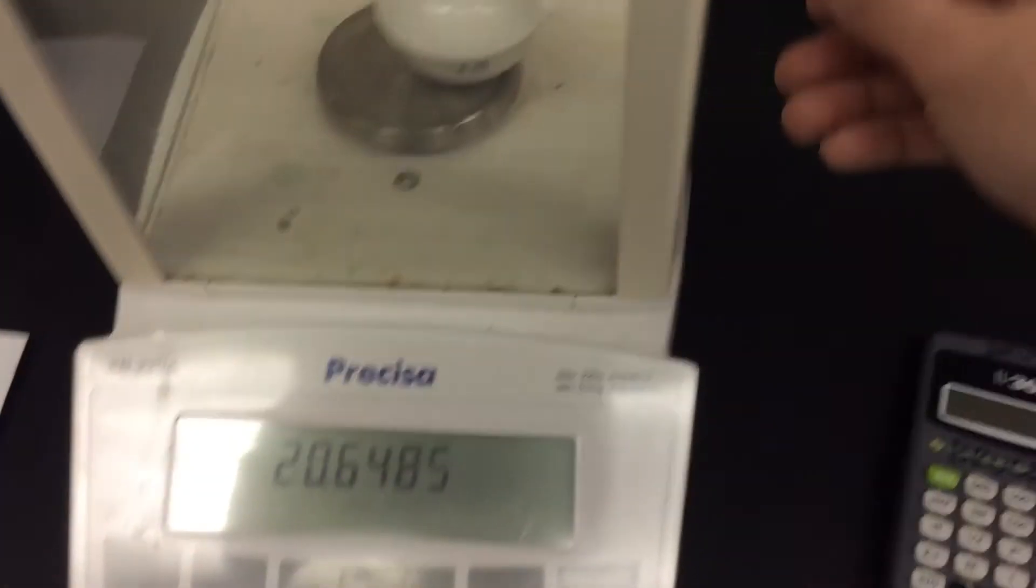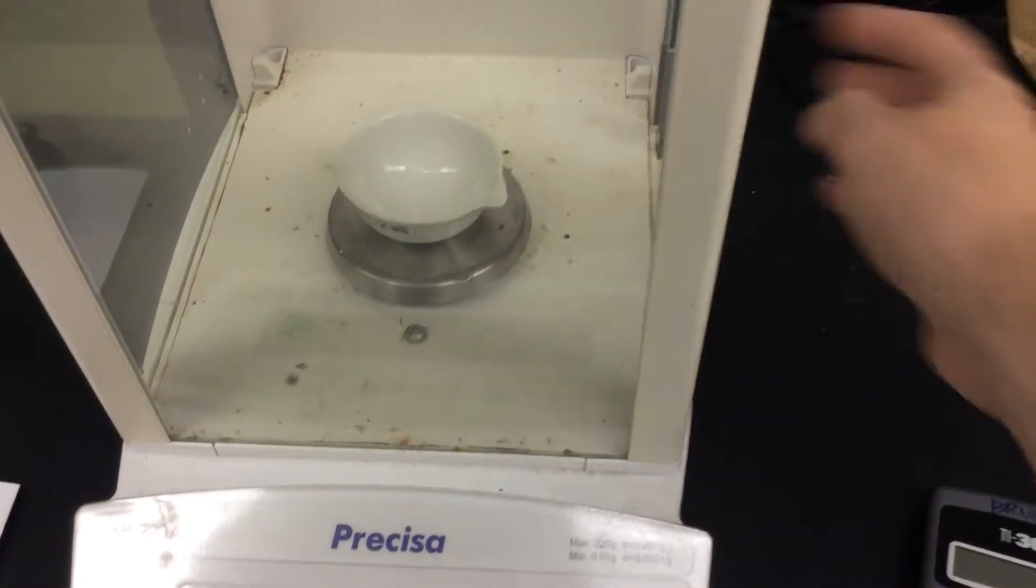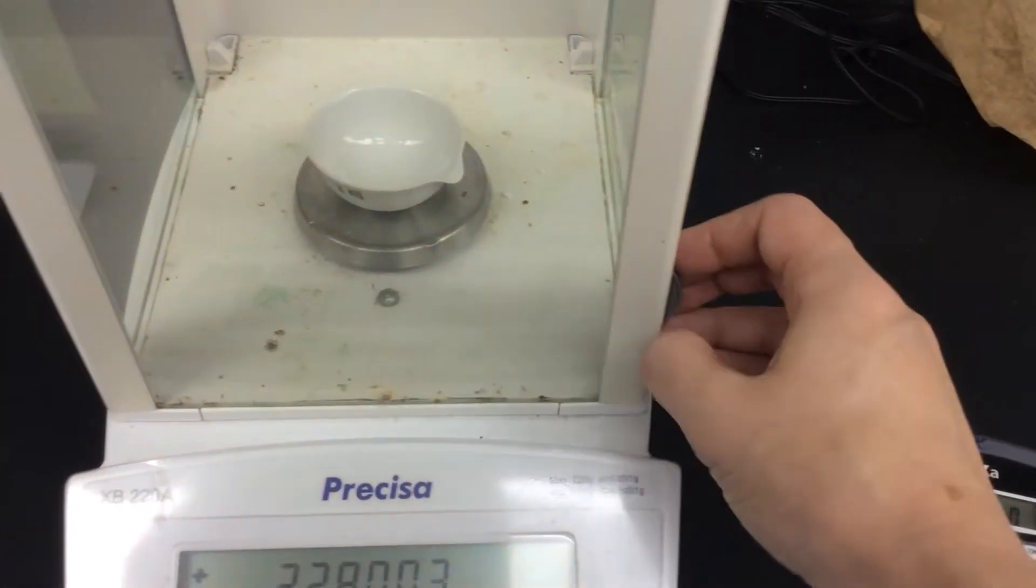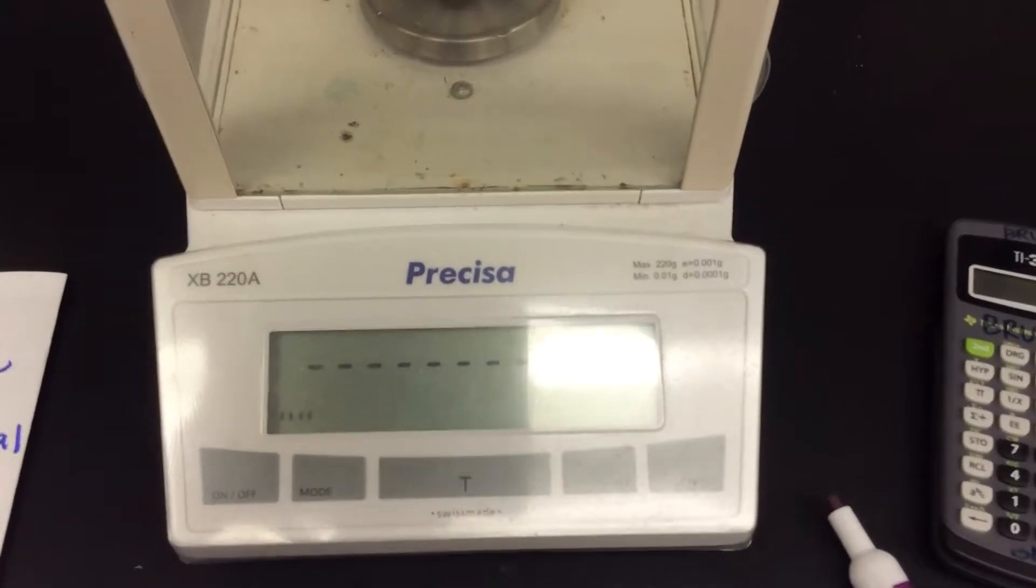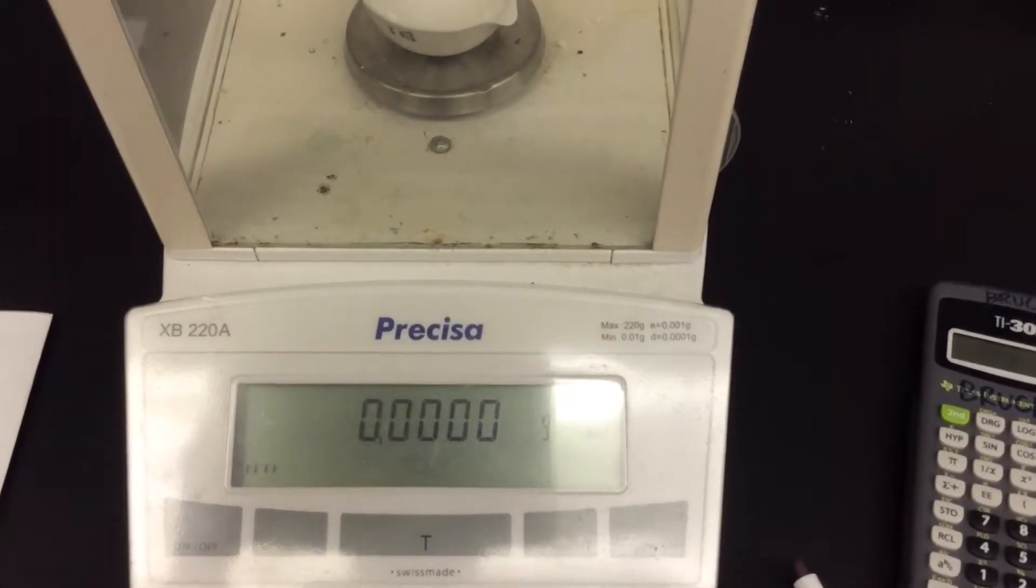So first thing we're going to do is we're going to take our dish, put it on the analytical balance, always close all four sides. And now what we're going to do is tare. That tells the balance, okay, this is what zero looks like.